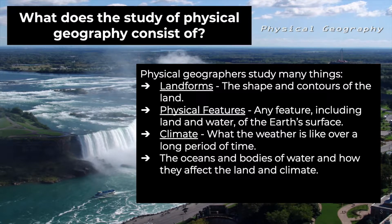Oceans and bodies of water, and how they affect the land and climate, are another thing physical geographers study. Oceans have a lot to do with our weather. If the oceans are warm, there's a lot of evaporation that can occur and storms become stronger and more intense. With the oceans warming, that is very consequential to the overall climate of our planet.